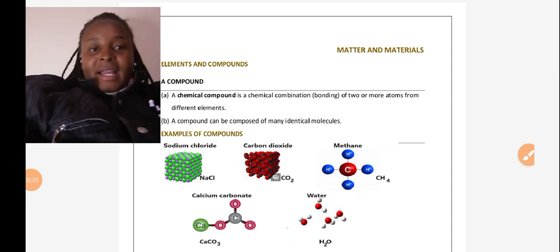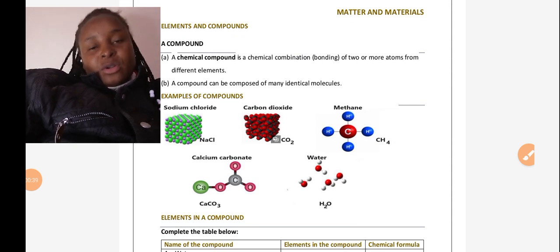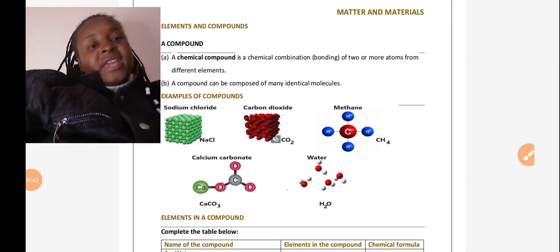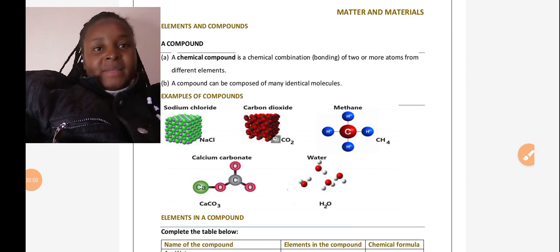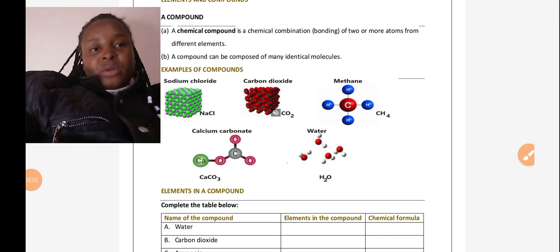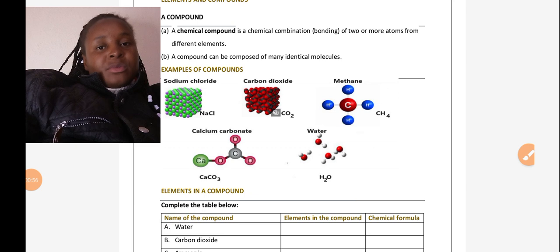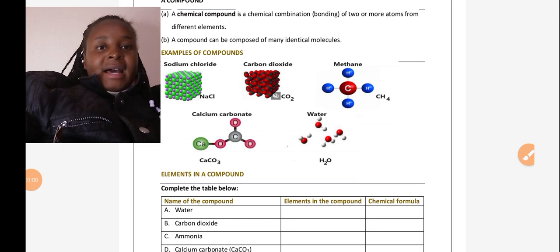A chemical compound is a chemical combination. When we talk of a chemical combination, we are referring to bonding where we have two or more atoms from different elements combine or come together. This is a chemical bond between two or more atoms from different elements, and these compounds can be composed of many identical molecules.